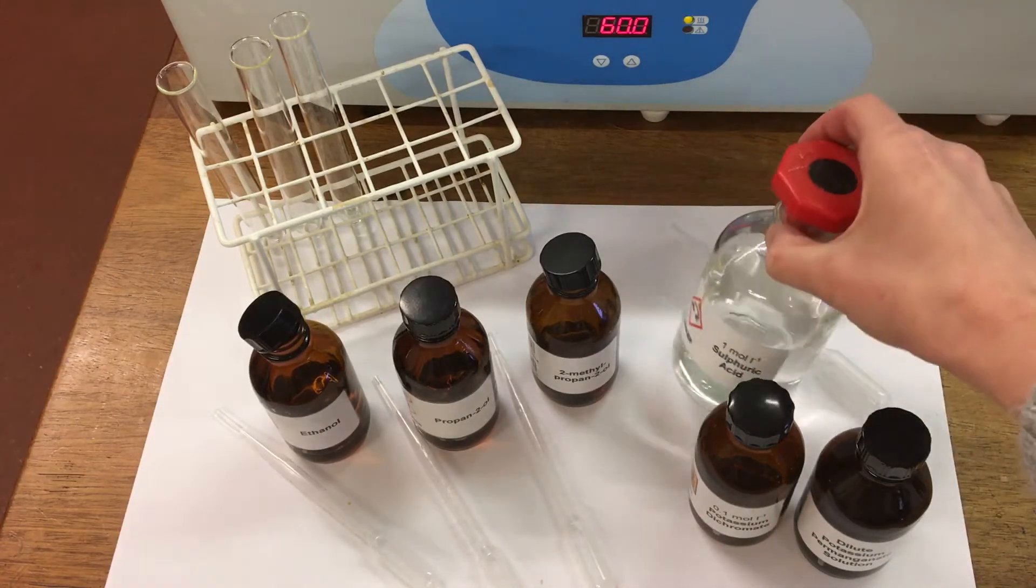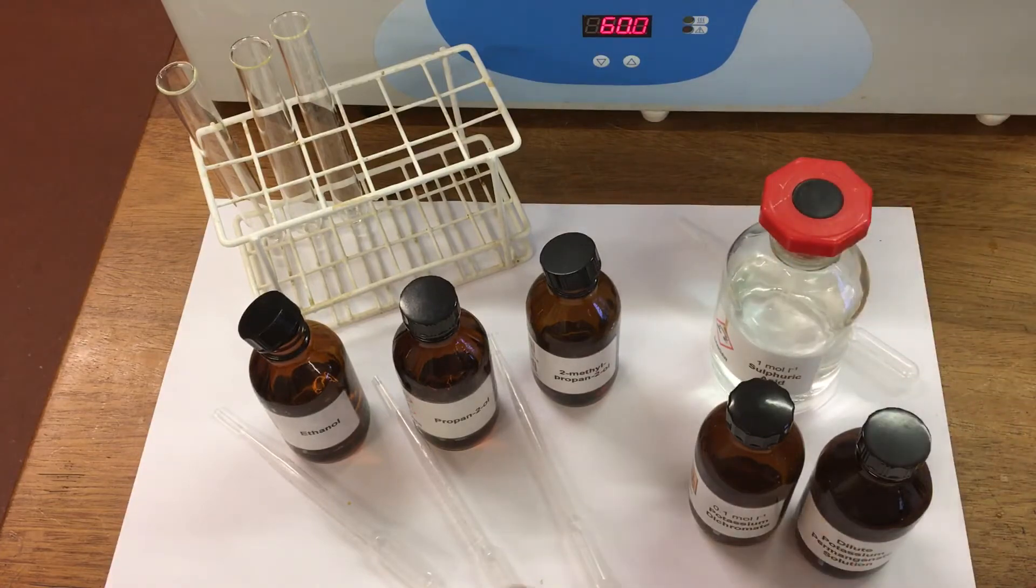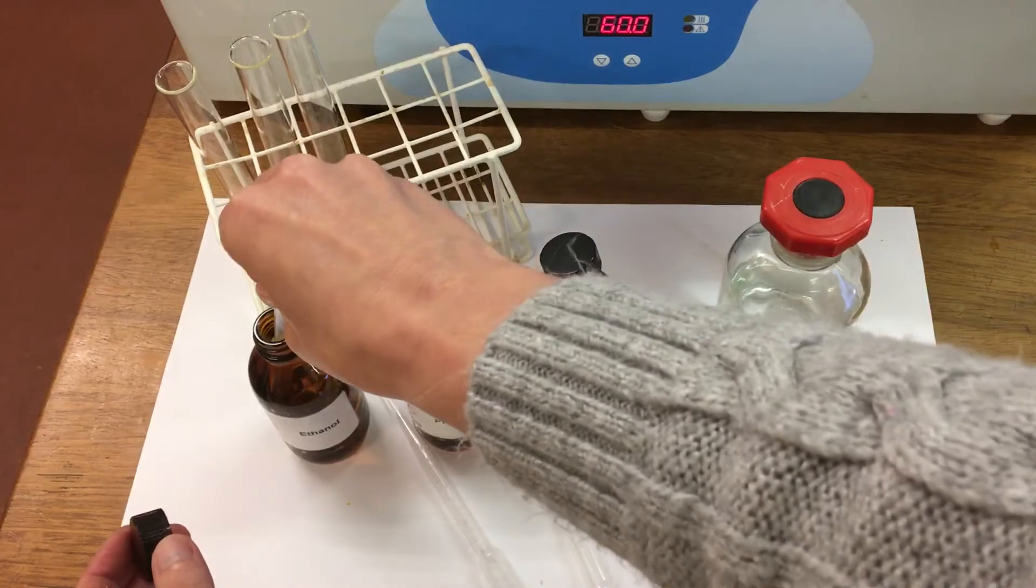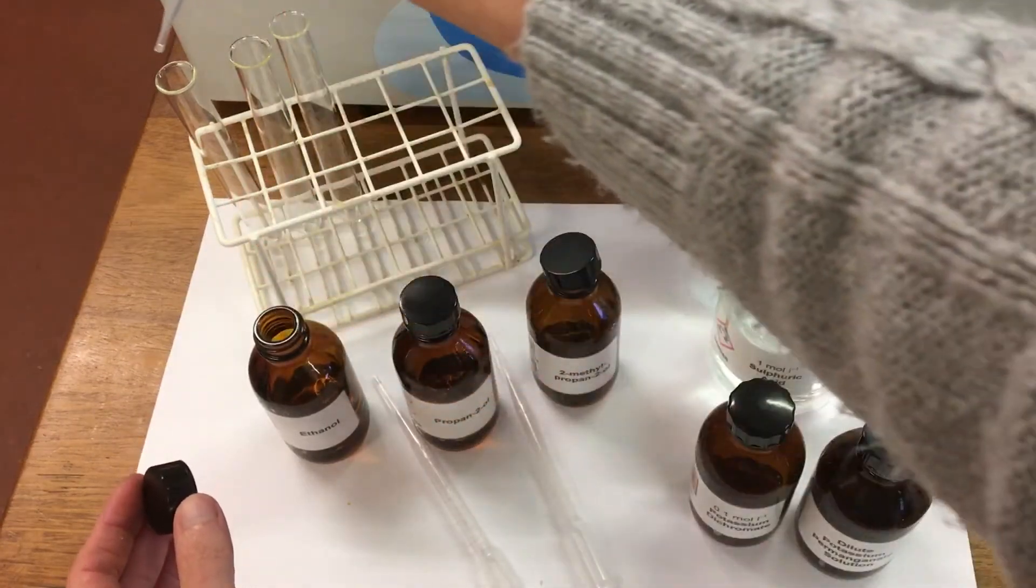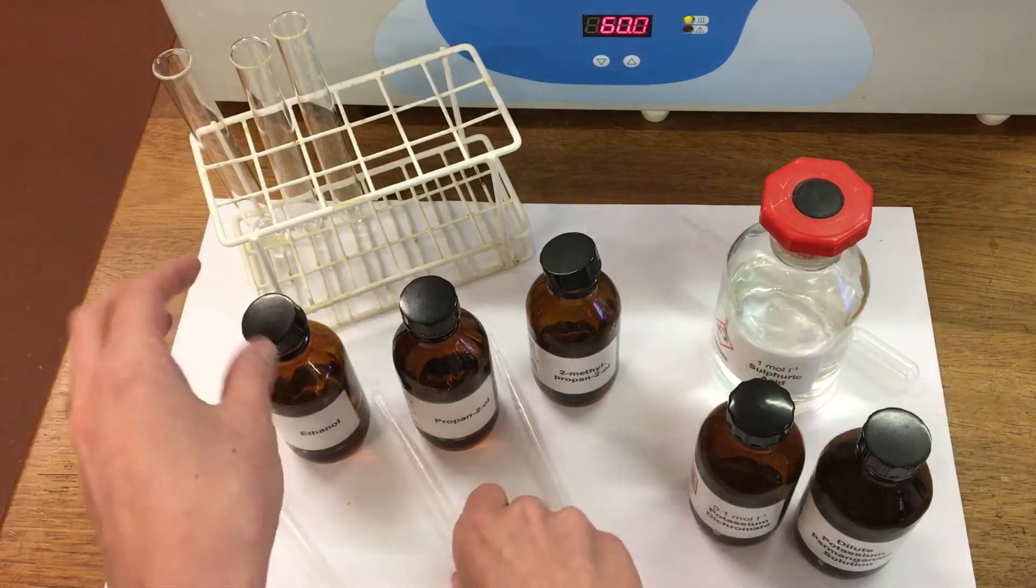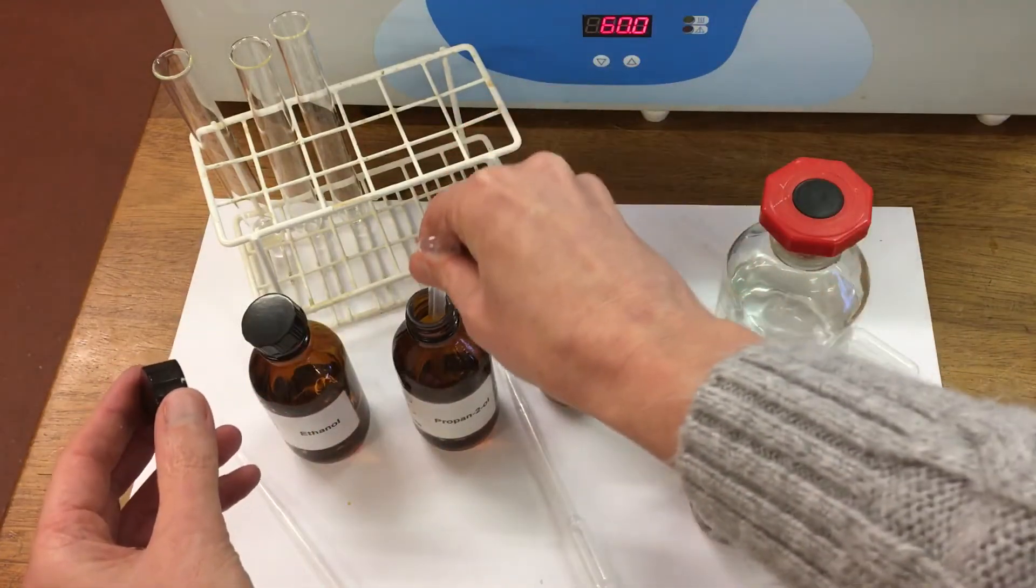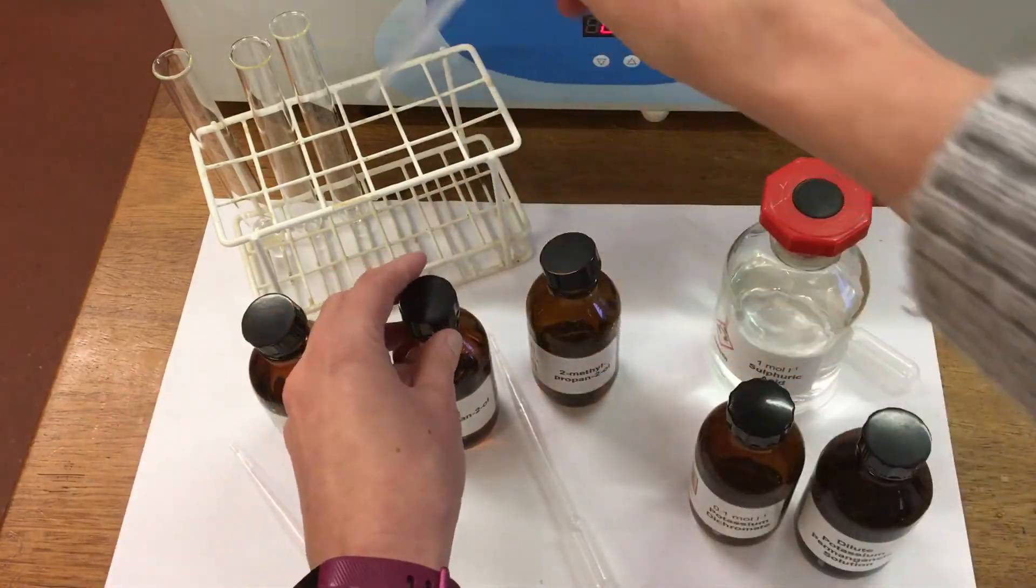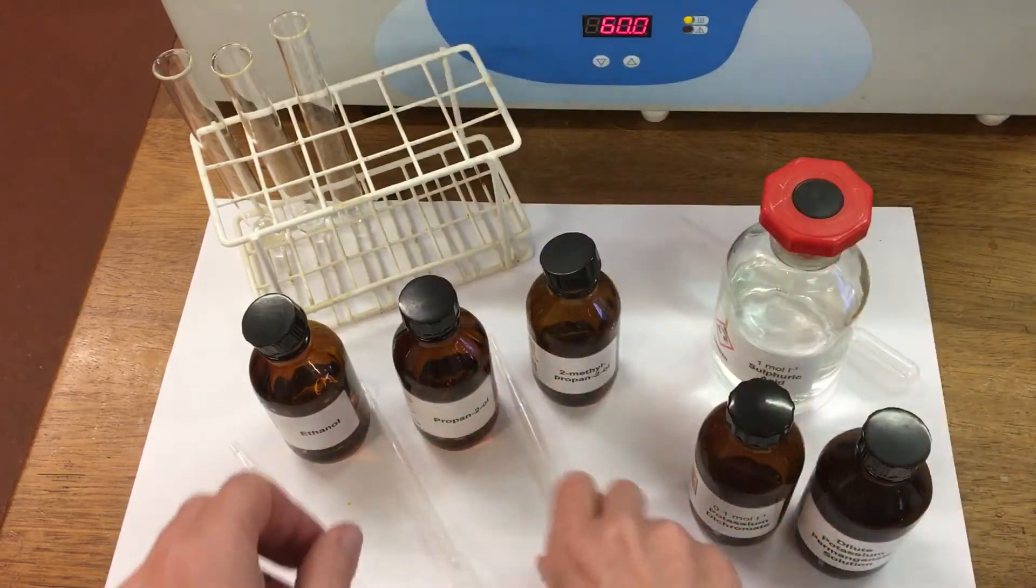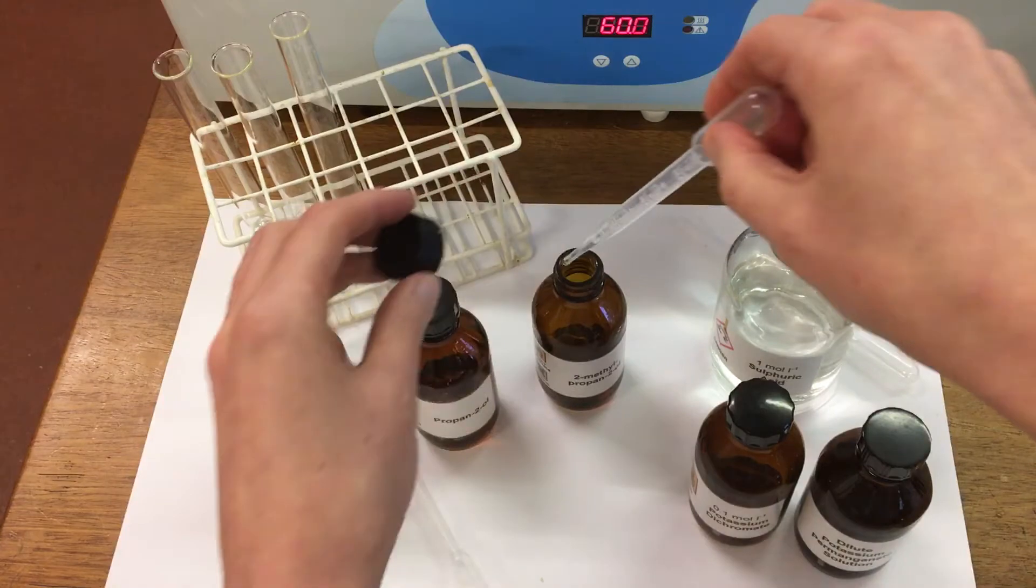So the first step, I'm going to pop a couple of mils of each alcohol into a test tube. So we've got ethanol, propan-2-ol, and 2-methylpropan-2-ol.